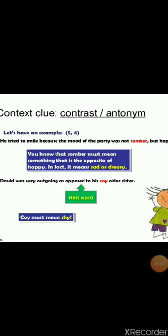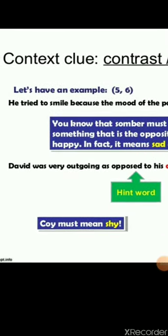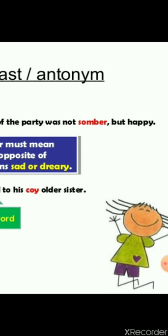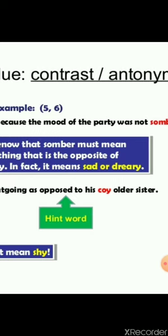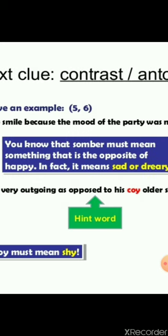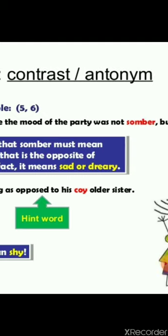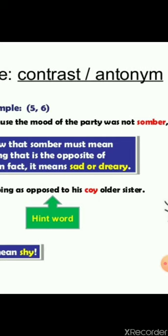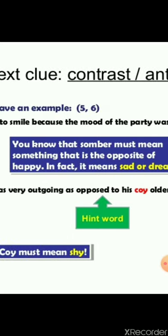Understand with this example: 'He tried to smile because the mood of the party was not somber, but happy.' You know that somber must mean something that is the opposite of happy because of the signal word 'but.' Happy is the clue for you. That means somber carries a negative meaning — somber means lack of brightness, not a happy feeling. So the contrast signal word 'but' helped you identify that somber is the opposite of happy.